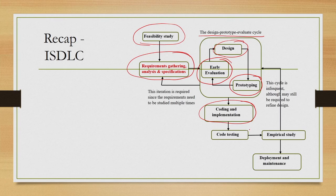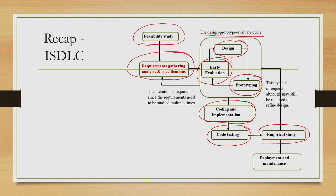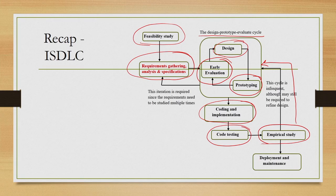Once the system is implemented we need to test it — that is the code testing stage. After the entire system is coded, implemented and tested, and we are to some extent assured of its executability, we still need to test it for usability, which is one of the key concerns in our interactive systems. That is done in the empirical study stage, which is expected to be done once or twice at most because this stage is quite costly. Once this stage is complete and we are assured of the usability as well as executability, we go for deployment and maintenance — that is our last stage.